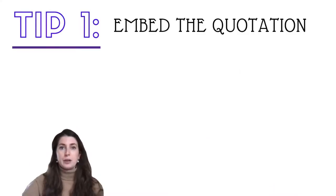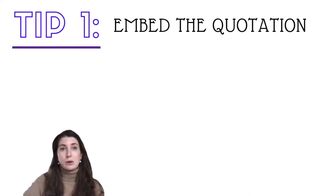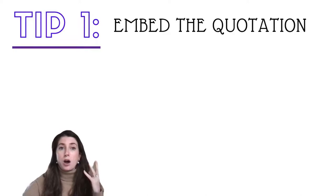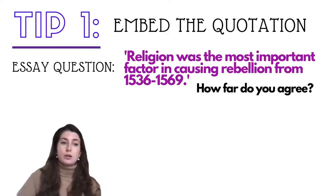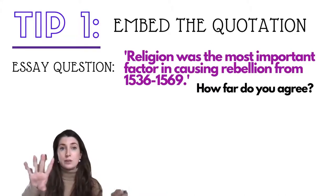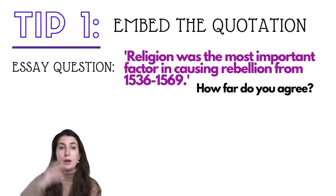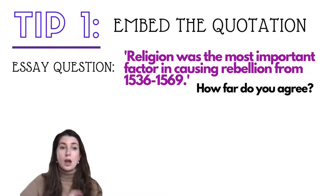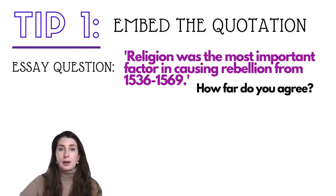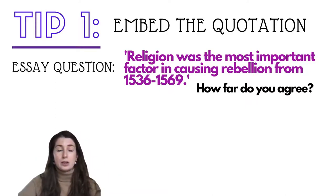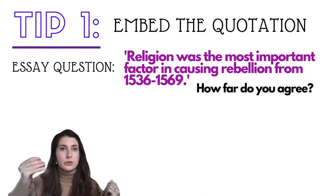Tip number one: embed the quotation. Most of the essay questions you get asked for the argument-based essay are quotations with a 'how far do you agree' statement. For example, the question I'm going to be using throughout this video is: 'Religion was the most important factor in causing rebellion from 1536 to 1569.' This is from the Tudors 1C topic for the AQA exam board. As you can see, we've got a quotation followed by a 'how far do you agree.' Sometimes they ask an actual question, but when you get given a quotation, it's gold dust.